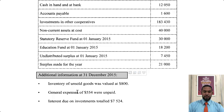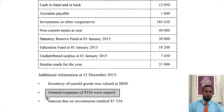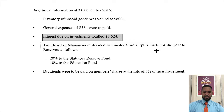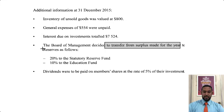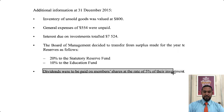Additional information at 31st December 2015: inventory of unsold goods valued at $800; general expenses of $554 unpaid — that's an accrual; interest due on investments totaling $7,524 — that sounds like a receivable, so that's an asset. The Board of Management decided to transfer from the surplus made for the year: 20% to the statutory reserve fund and 10% to the education fund. And then dividends would be paid to member shares at a rate of 5% of their investment.